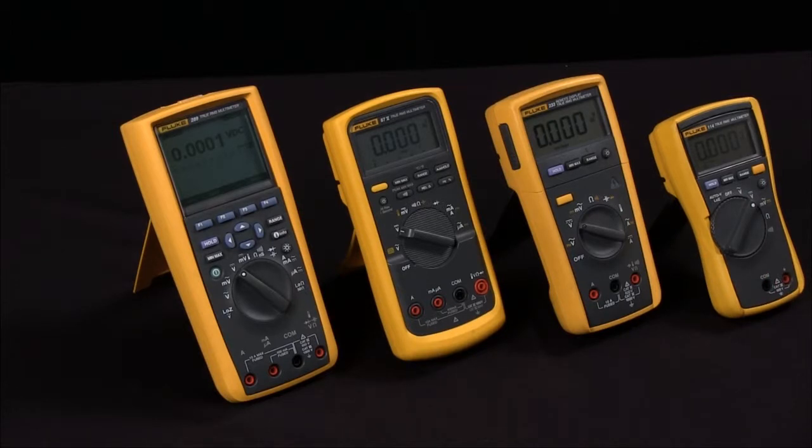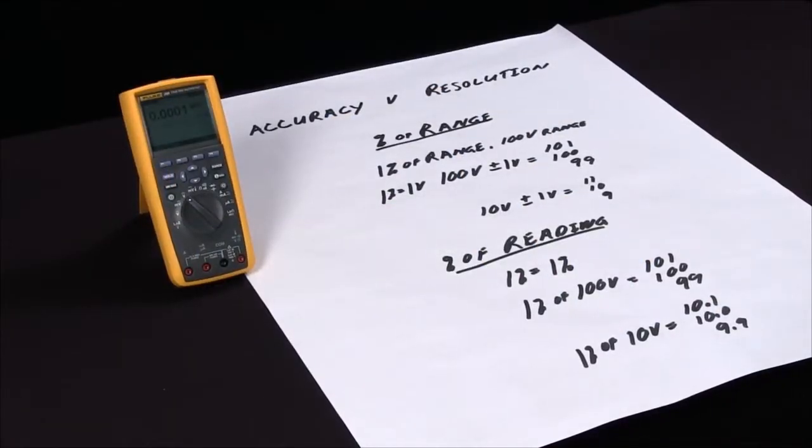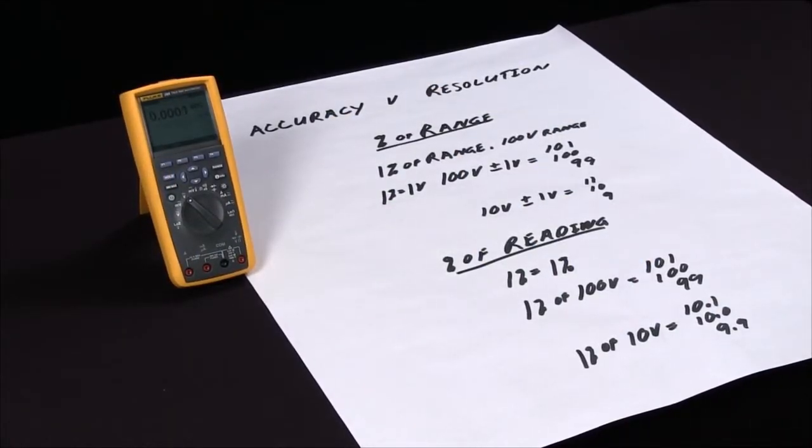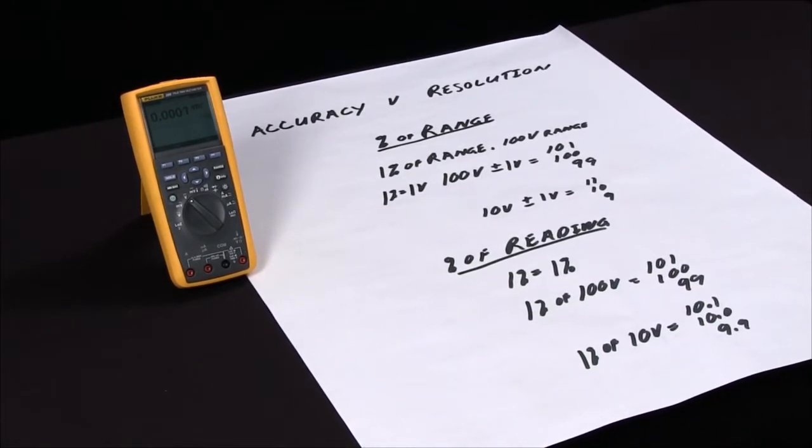Typically your higher cost multimeters will have a higher level of accuracy because it takes a much more precise circuit to measure things with more precision. Accuracy is an important specification when selecting an instrument because in many cases you want the accuracy of the meter you're using to be at least four times the accuracy of the measurement you're taking. A lot of times ten times is actually the goal.